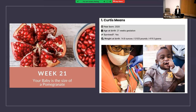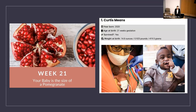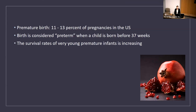About 11 to 13 percent of pregnancies in the United States end in premature birth — defined as birth before 37 weeks of gestation. The survival rates of very young premature infants are constantly increasing, and that also means the incidence of retinopathy of prematurity is increasing. ROP remains a major cause of preventable vision loss in premature children; it occurs in children born at 30 weeks or less and with a birth weight of 1500 grams or less. The incidence of ROP in premature infants within the United States has nearly doubled from 4.1% in 2003 to 8.1% in 2019.